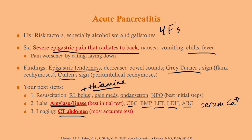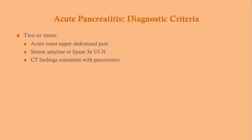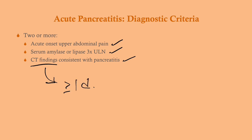For imaging, get a CT of the abdomen — that's the best way to image the pancreas. Cullen's sign is peri-umbilical hemorrhage, and Gray-Turner's sign is on the flank. The diagnostic criteria are: acute onset of upper abdominal pain, plus amylase and lipase three times the upper limit of normal, or CT findings consistent with pancreatitis. Note that CT findings may not appear until a full day after pain onset, which is why amylase and lipase are so important.